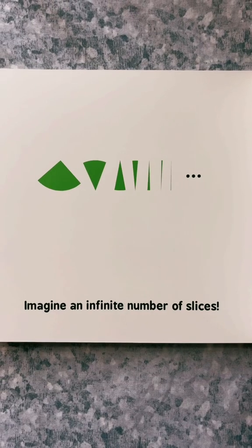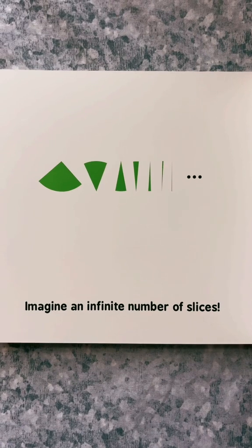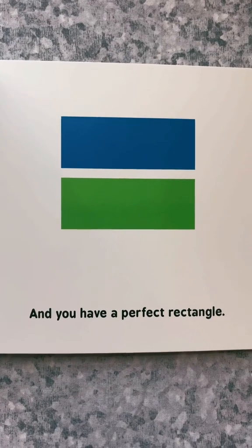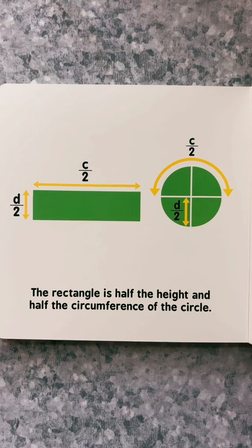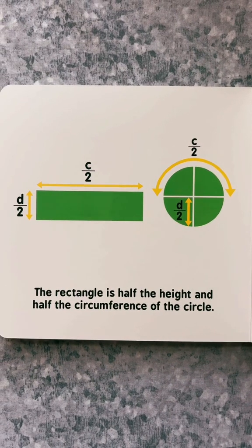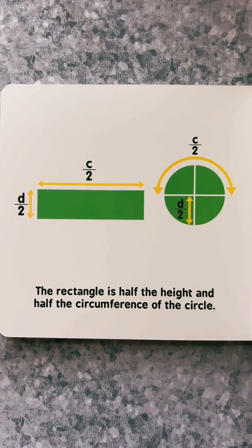Imagine an infinite number of slices, and you have a perfect rectangle. The rectangle is half the height and half the circumference of the circle.